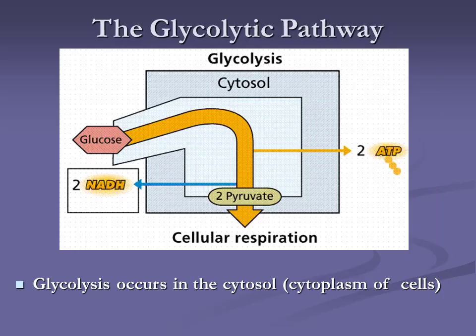Glycolysis occurs in the cytoplasm. As a net production per glucose molecule, we are going to produce two NADH molecules, two ATP molecules, and we're going to convert that one molecule of glucose — a six-carbon molecule — into two three-carbon molecules called pyruvate. So we start with glucose and end up with two NADH, two ATP, and two pyruvate.